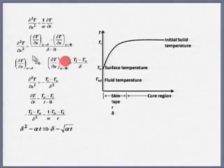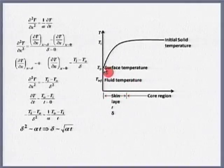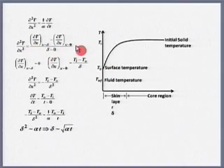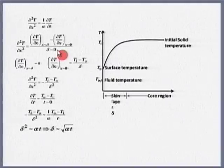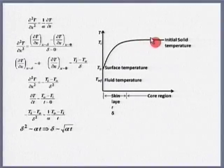So ∂²T/∂x² is of the order of (∂T/∂x at x ~ δ minus ∂T/∂x at x ~ 0) divided by δ. At x tending to δ there is no temperature gradient, so I can put that as zero.